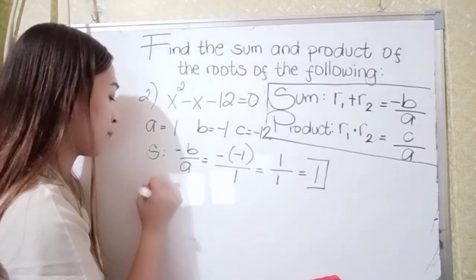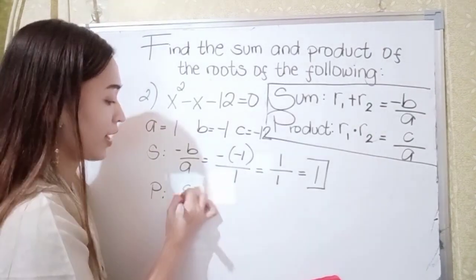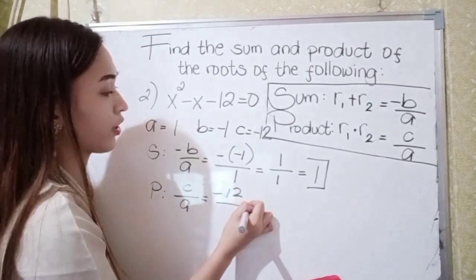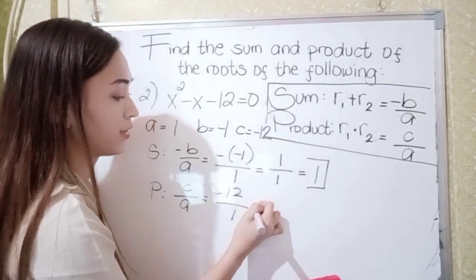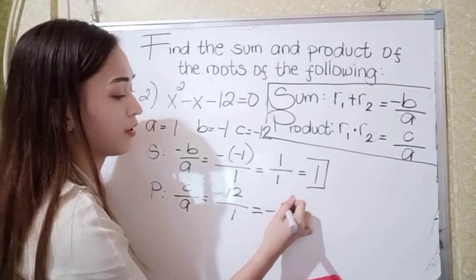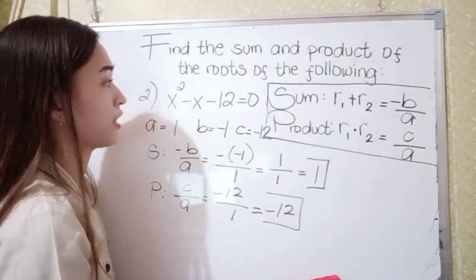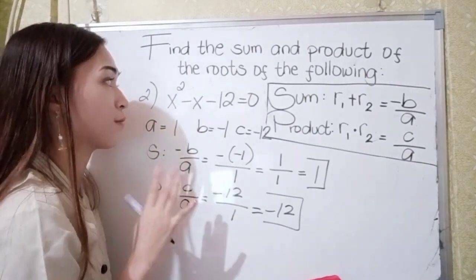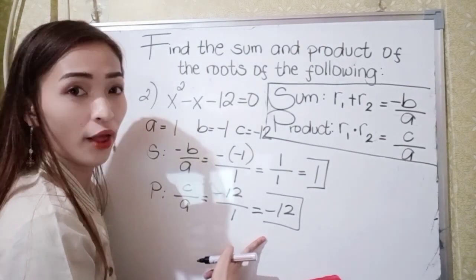For the product of x squared minus x minus 12, we use c over a. Our c is negative 12 over a which is 1. So negative 12 divided by 1 is negative 12. The product of the roots is negative 12.